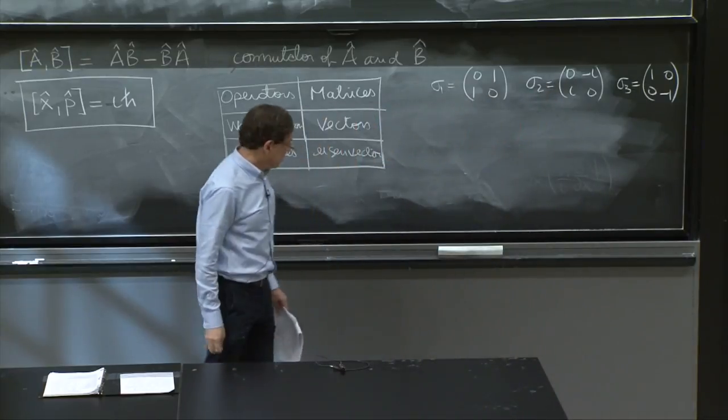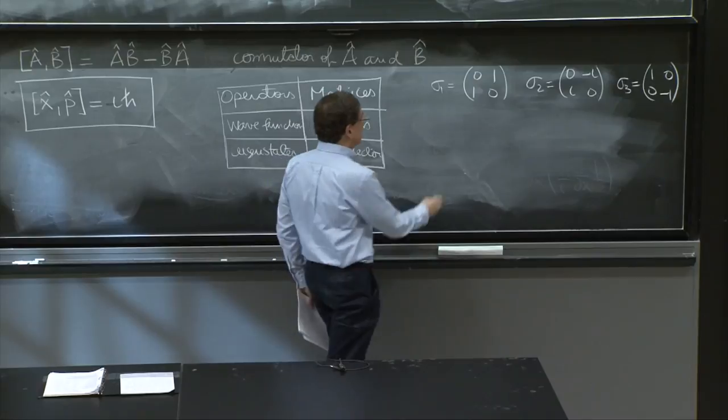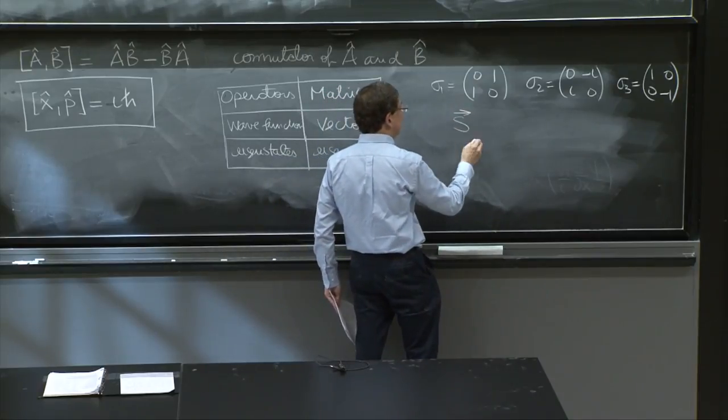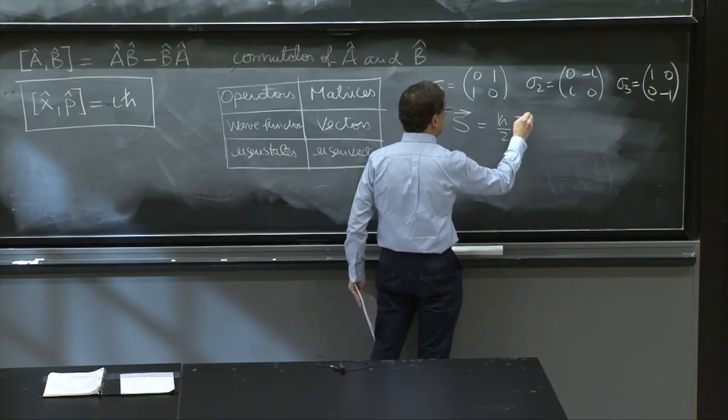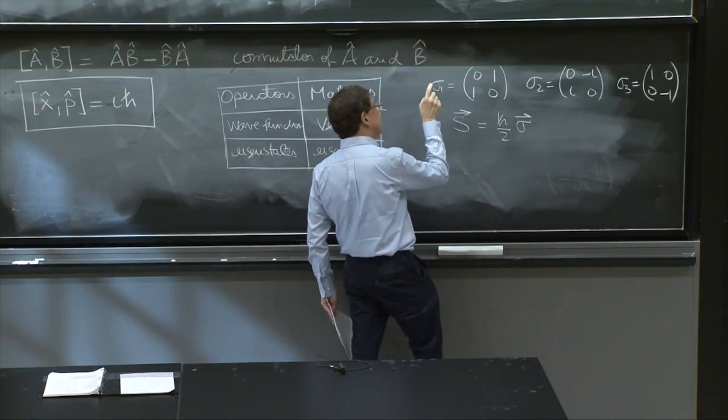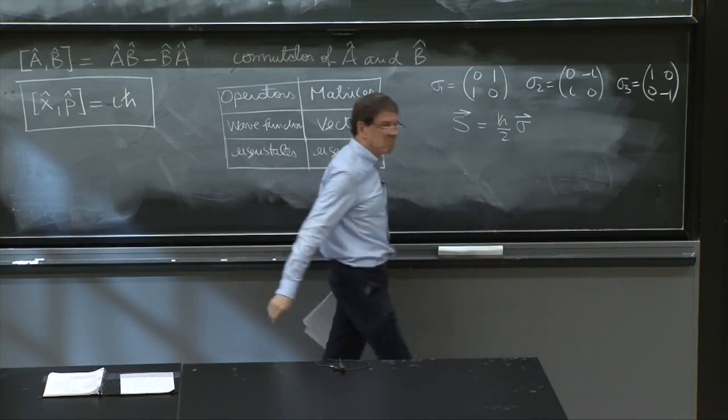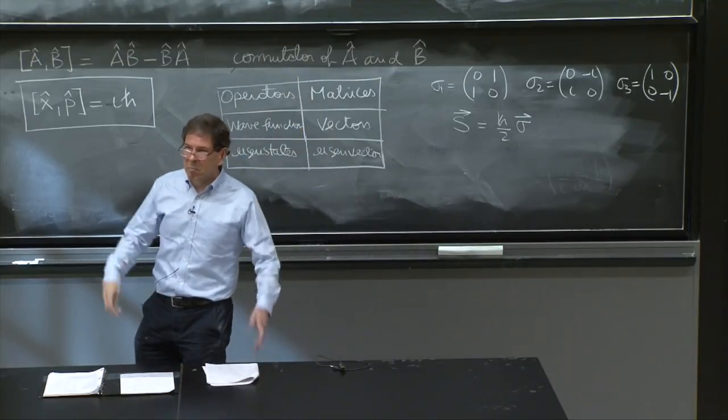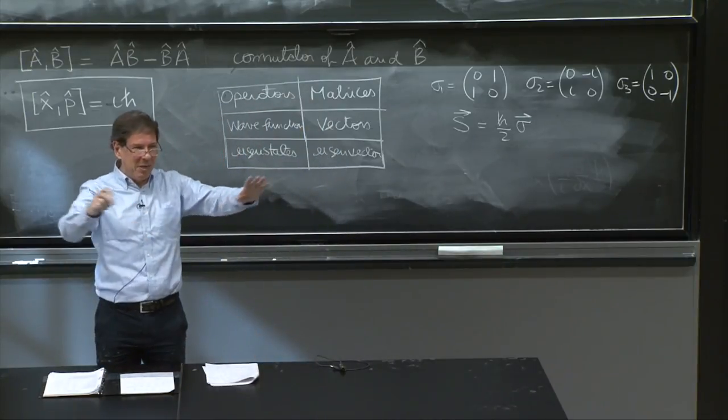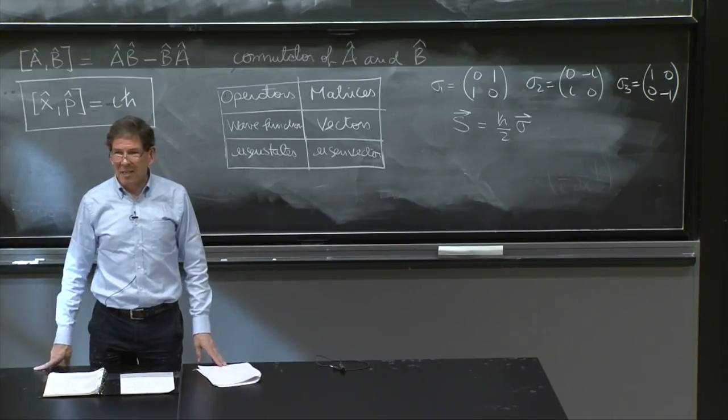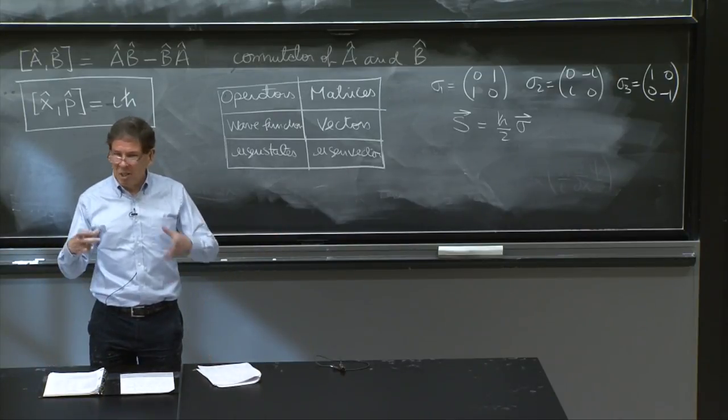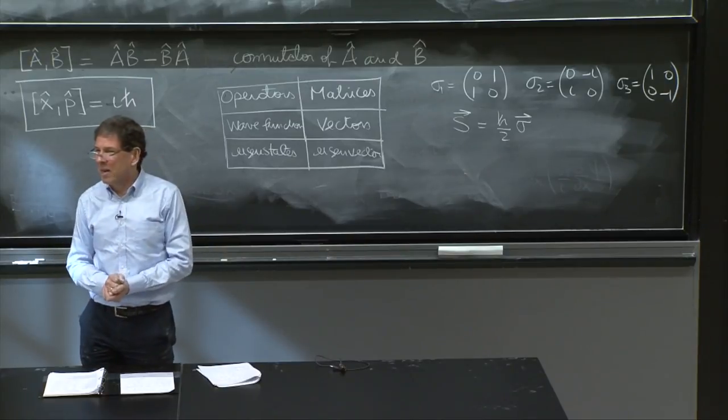And a preview of things to come. The spin operator is actually h bar over 2 sigma. And you think of sigma as having three components. That's where it is. Spins will be like that. We won't have to deal with spins this semester. But there it is. That's spin 1 half. Somehow these matrices encode spin 1 half.